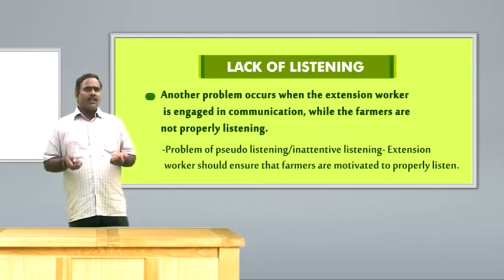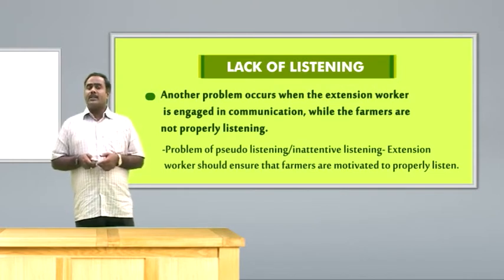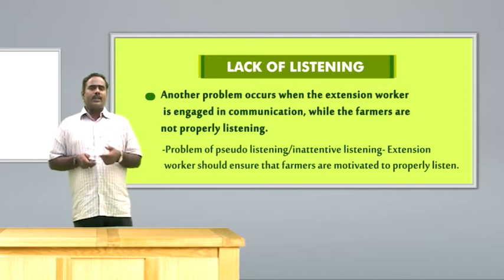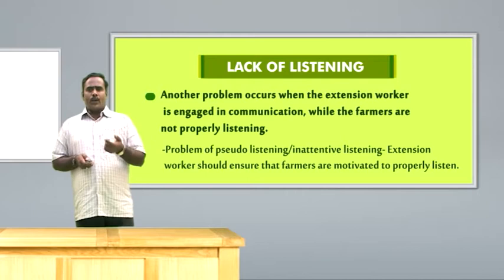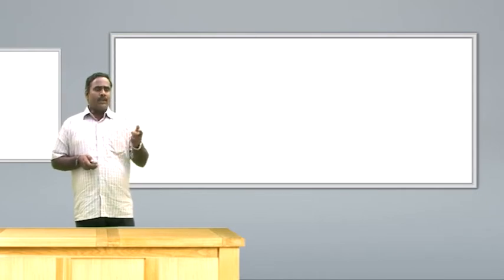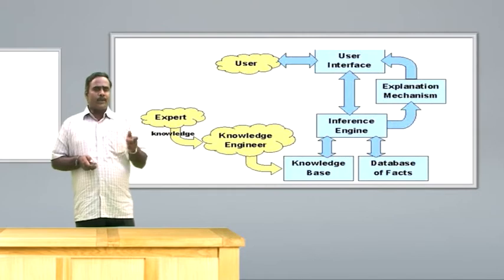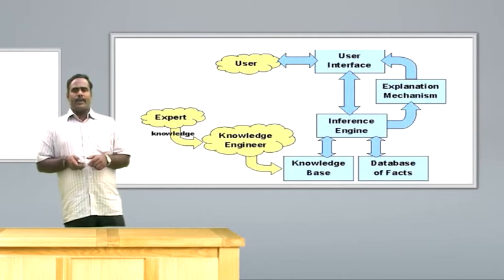So what are the important components in the expert system? If you do not know the expert system components, you cannot develop the expert system. There are five important components: the first is a user interface, the second is an explanation facility, working memory, inference engine, and the knowledge acquisition facilities. These components I will explain with a suitable diagram, so you will understand the components of the expert system.